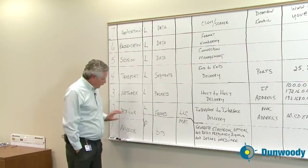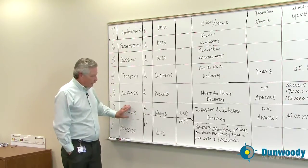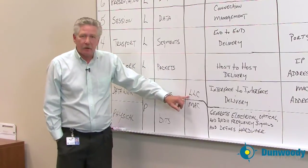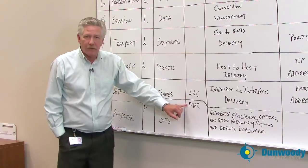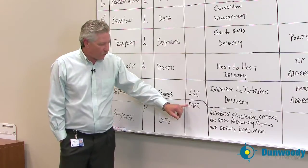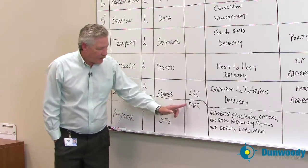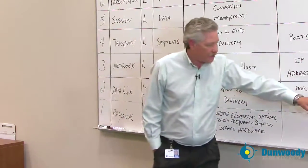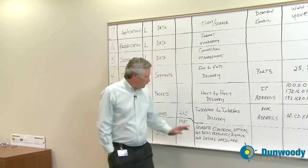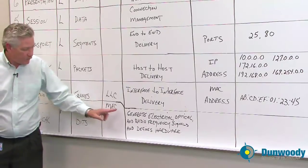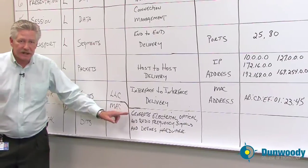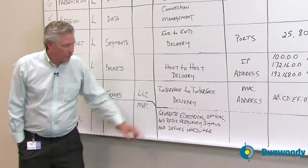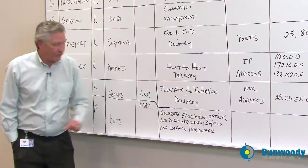In the data link layer, we actually have two sub-layers. One is called the LLC, or logical link control. The second is called the MAC, or media access control. Starting with the MAC, this is what actually generates not only the MAC address, but also puts the signal on the wire — it creates the signal that is generated, either electrical, optical, or radio frequency.